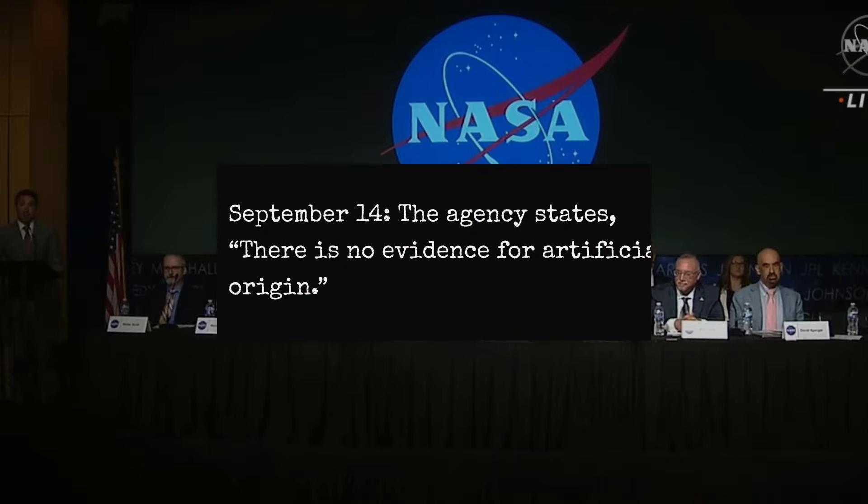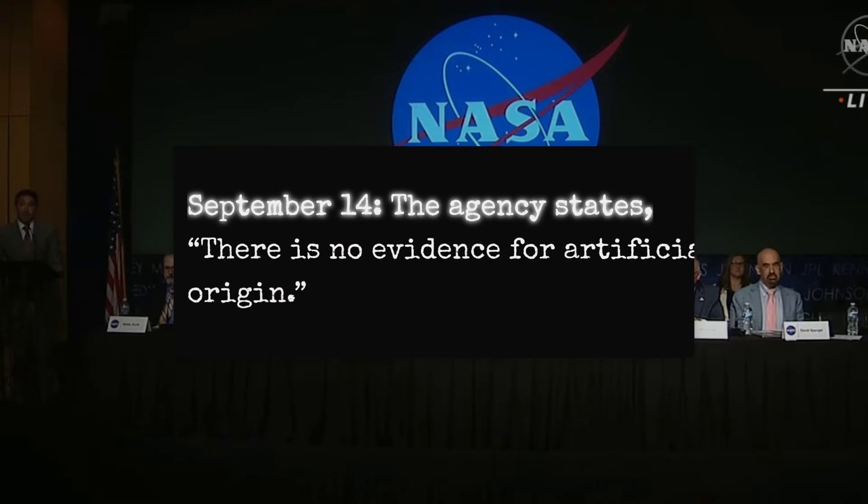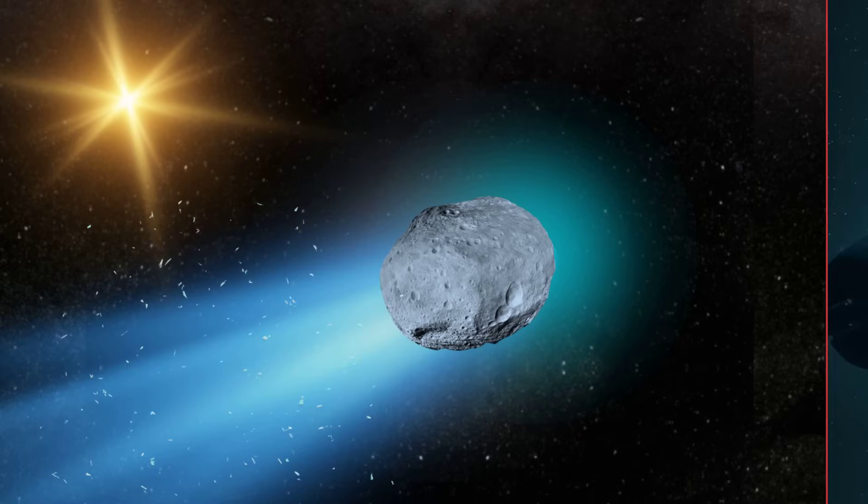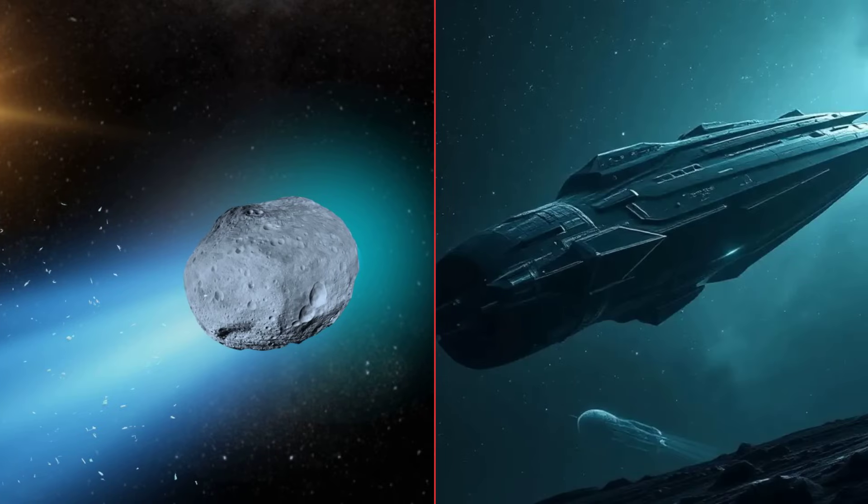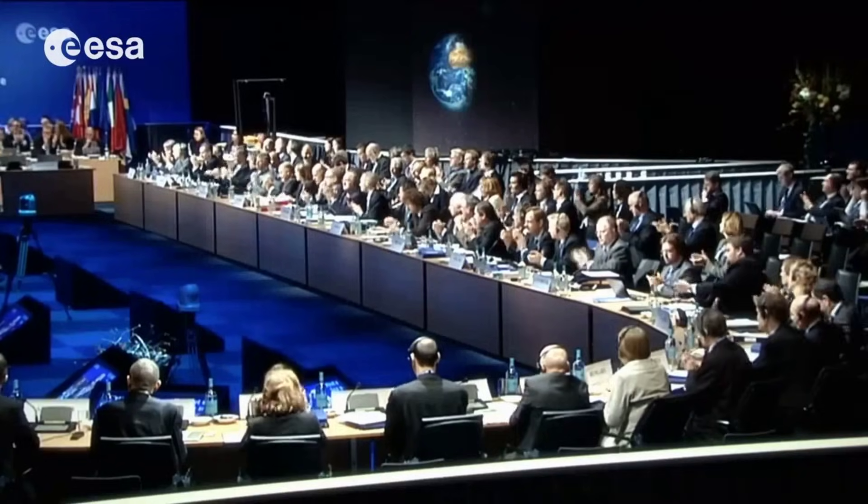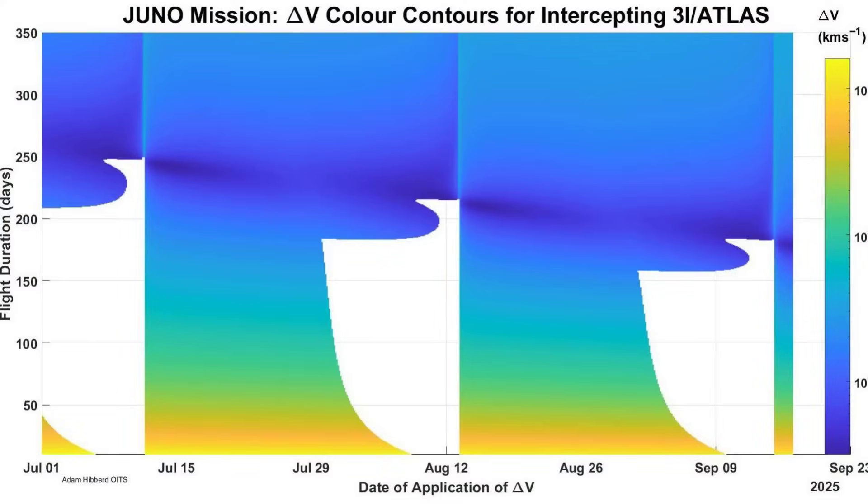The debate spills beyond academia. NASA's press office convenes emergency calls with the Department of Defense and NOAA. On September 14th, the agency issues a rare direct statement: 'There is no evidence for artificial origin.' Internal memos, later leaked, show a tug-of-war over wording, how to address public fascination without fueling conspiracy. Meanwhile, ESA analysts push for a rapid interceptor mission, citing the unique orbital window as both an opportunity and a puzzle.